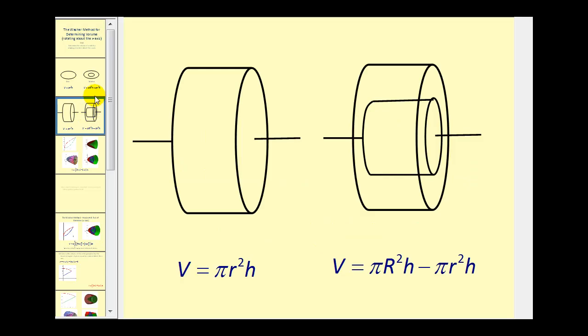The washer method is very similar to the disk method. For the disk method, we combine the idea of a volume of a cylinder with the idea of integration. The volume of a solid cylinder, or solid disk, would be equal to pi r squared h, where this would be the radius.